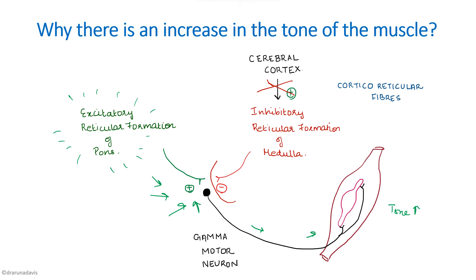To summarize, there are two centers: the excitatory reticular formation in the pons and the inhibitory reticular formation in the medulla. The excitatory reticular formation of the pons is spontaneously discharging, whereas the inhibitory reticular formation is under the influence of the cerebral cortex. When there is a lesion in the corticospinal tract, this cortical stimulation of the inhibitory reticular formation is lost, so inhibition of the gamma motor neuron does not occur, resulting in exaggerated tone and reflexes.